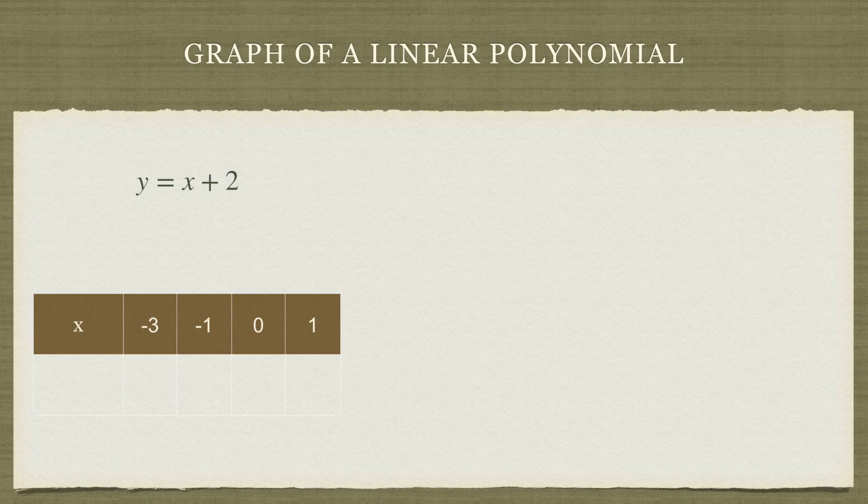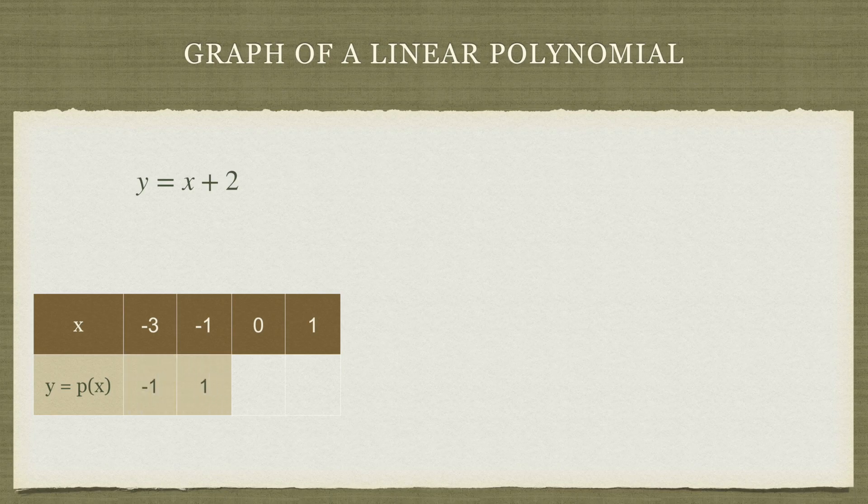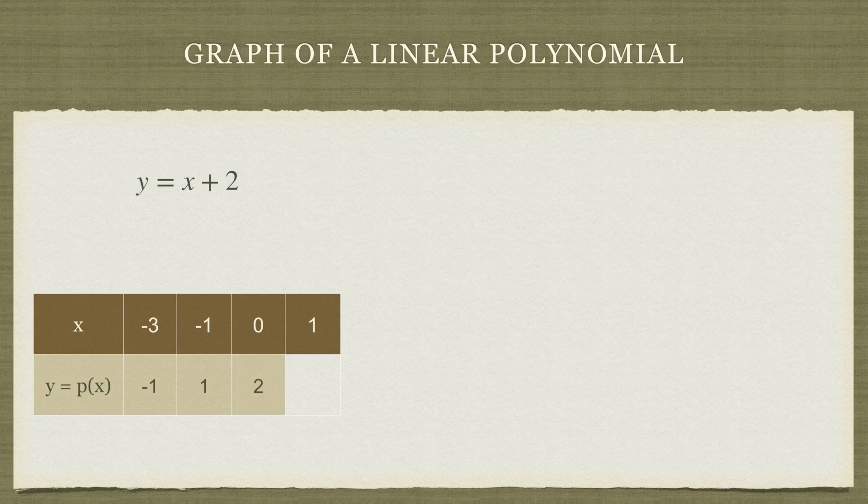For each of these values of x, we need to find out the value of the polynomial. We have seen it before and I'm going to provide a link of how to find out the value of a polynomial for a value of the variable. So when x is -3, the polynomial is -1. When x is -1, the polynomial is 1. For 0 it is 2, and for 1 it is 3.